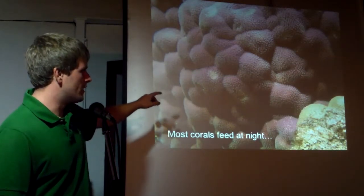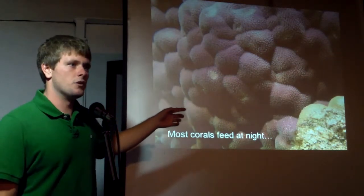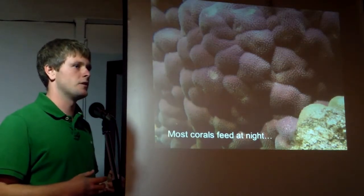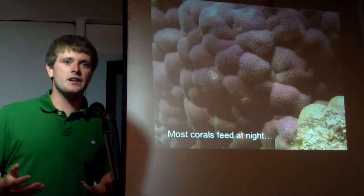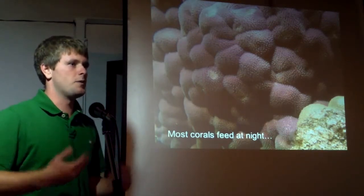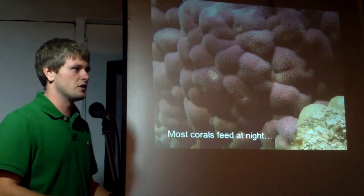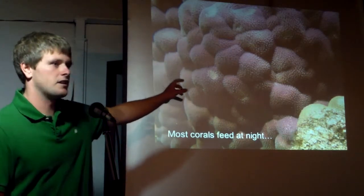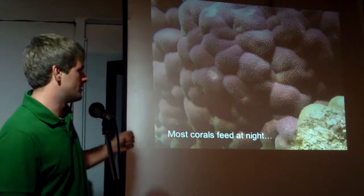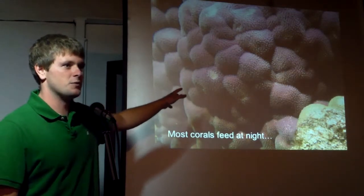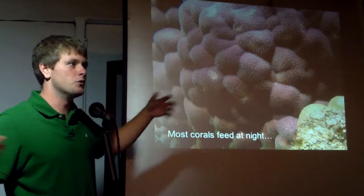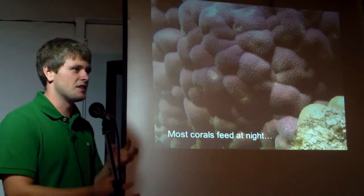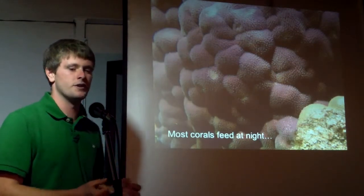There are a couple reasons corals come out at night. One is that a lot of coral predators are active during the day, so by hiding they can avoid heavy predation. At night, that's when food comes up off the bottom. If you were to go out at night and shine a flashlight, you'd see a lot of tiny things floating around that you wouldn't normally see during the day. Corals are sessile — they cannot move — so they have to wait until food comes to them, which is why they have so many nematocysts and tentacles.